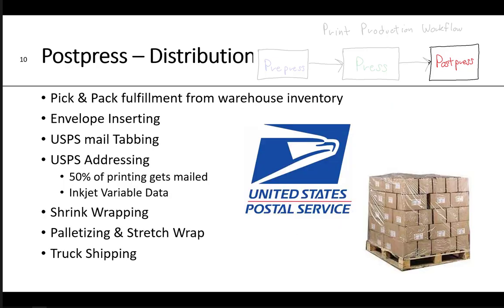Post-press also includes distribution: pick-and-pack fulfillment from warehouse inventory, envelope inserting, USPS mail tabbing, and USPS addressing. About 50% of everything that gets printed gets mailed, and addressing is typically done by inkjet variable data from a database file — as simple as Excel. Distribution also includes shrink wrapping, palletizing and stretch wrapping, and finally truck shipping.